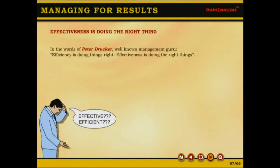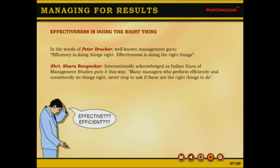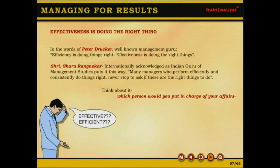In the words of Peter Drucker, well-known management guru: Efficiency is doing things right. Effectiveness is doing the right things. Shri Sharyu Rangnekar, internationally acknowledged as Indian guru of management studies, puts it this way: Many managers who perform efficiently and consistently do things right, never stop to ask if these are the right things to do.